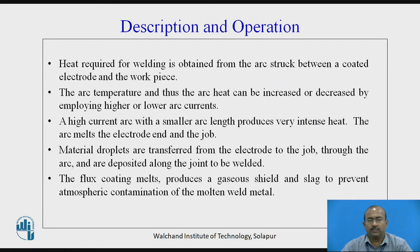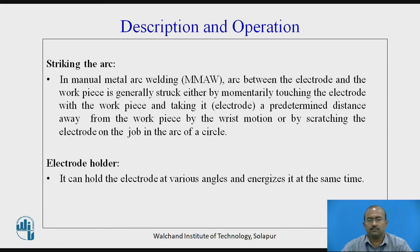Heat required for welding is obtained from an arc struck between the coated electrode and the work piece. Arc temperature and heat can be increased or decreased by employing higher or lower arc current. Material droplets are transferred from the electrode to the joint through the arc and are deposited along the joint to be welded. The flux coating produces a gaseous shield and slag to prevent atmospheric contamination of the molten metal. In manual metal arc welding, the arc is struck either by momentarily touching the electrode with the work piece and moving it a predetermined distance away by wrist movement, or by scratching the electrode on the work piece in an arc of a circle.